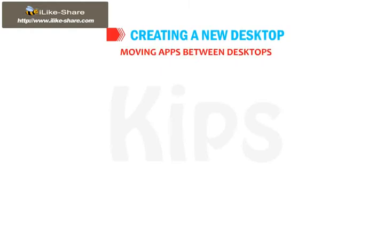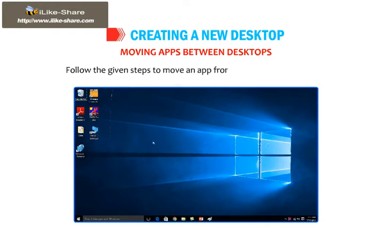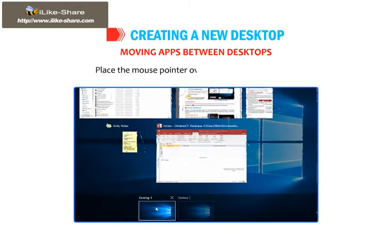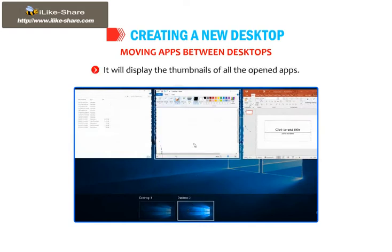Now we will talk about moving apps between desktops. Follow the given steps to move an app from one desktop to another. Open the Task View pane by clicking on the Task View button. Place the mouse pointer over the desktop thumbnail — it will display the thumbnails of all opened apps.